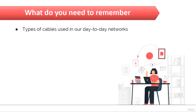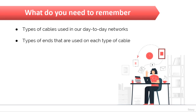Now what you need to remember: understand the various types of cables used in today's networks. Coaxial, other than cable modems, is rarely used, but twisted pair and fiber optic cables are very common. Also understand the various types of ends used on each cable — coax uses BNC, twisted pair uses RJ11 for voice and RJ45 for data, and fiber uses various ends depending on its use.